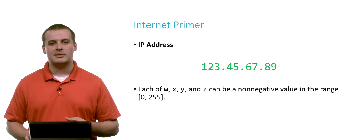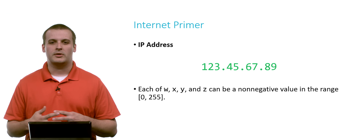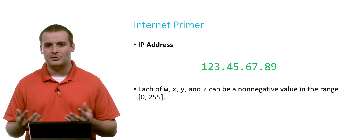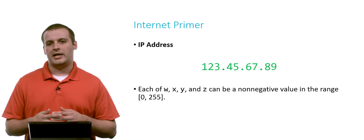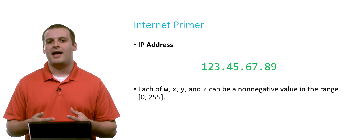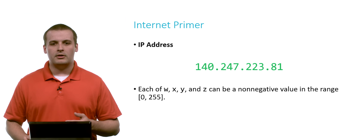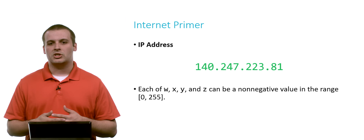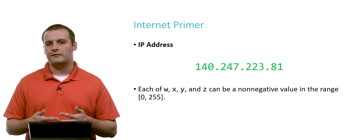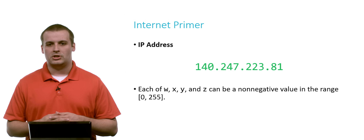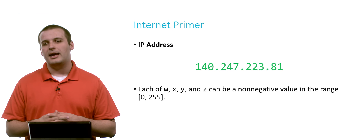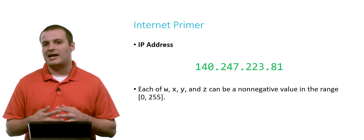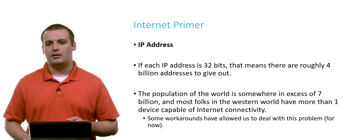So an IP address might look something like 123.45.67.89 — that's a generic example, and all values are in the range of 0 to 255, so that's a valid IP address. Here at Harvard University, all of our IP addresses start with 140.247. That's just the way that the IP addresses in this geographic area have been assigned, so 140.247.something.something might be an IP address that exists here at Harvard.